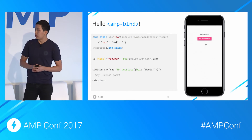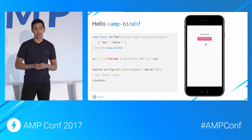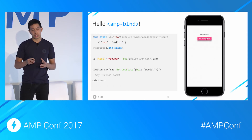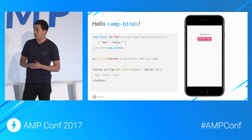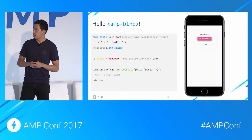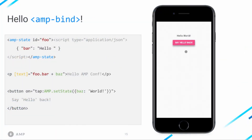Let's put those all together. These are the code snippets from the last three slides combined — our simple hello world example for amp-bind. At the top, the amp-state, which initializes the document-level JSON data. In the middle, a paragraph element whose text is bound to the expression foo.bar plus baz. And at the bottom, a button where on tap, it merges a simple object with a single key-value pair — baz mapped to the string world — into the document-level state. So tapping the button makes the paragraph element say hello world.